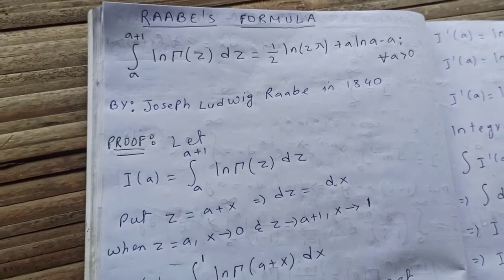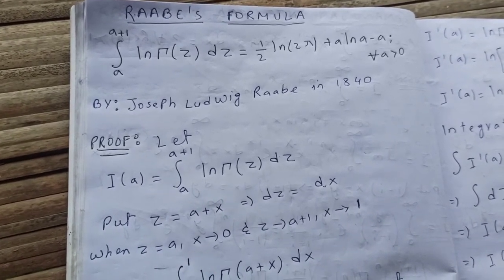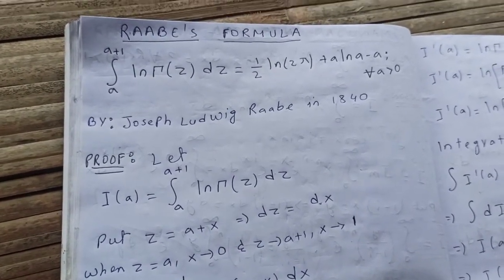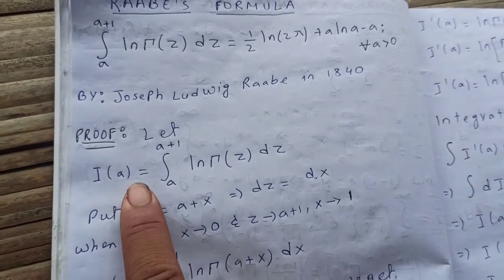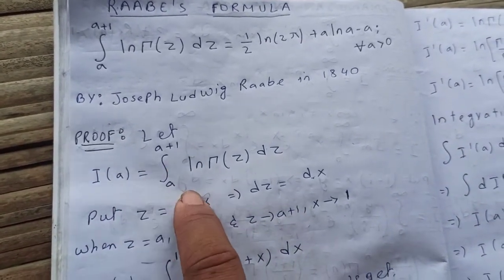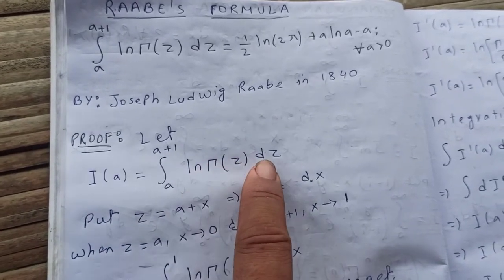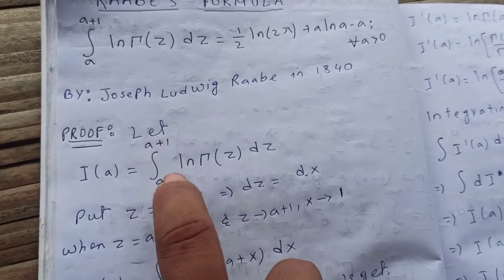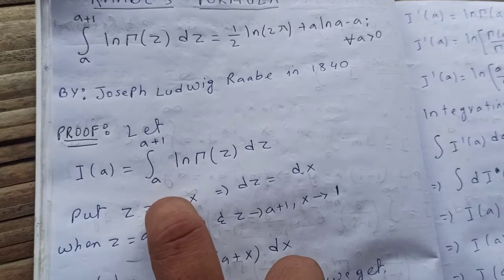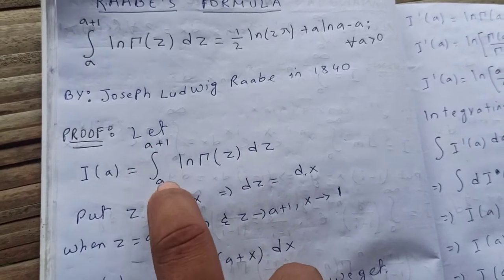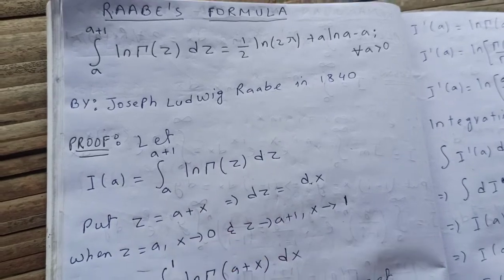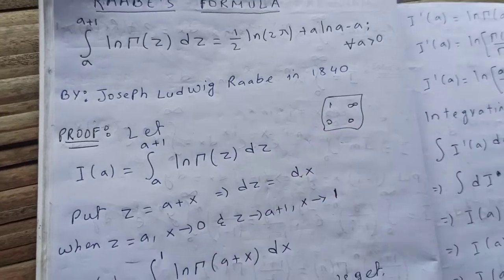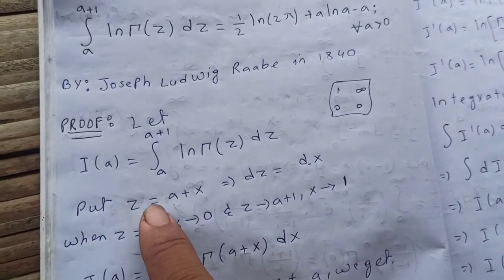Let the integral be I(a), because the lower limit and upper limit both depend on a. So I(a) is the integral from a to a plus one of log gamma(z) dz. Now we are trying to remove this dependence on a in the limits — meaning we want fixed limits like zero to one or zero to infinity.